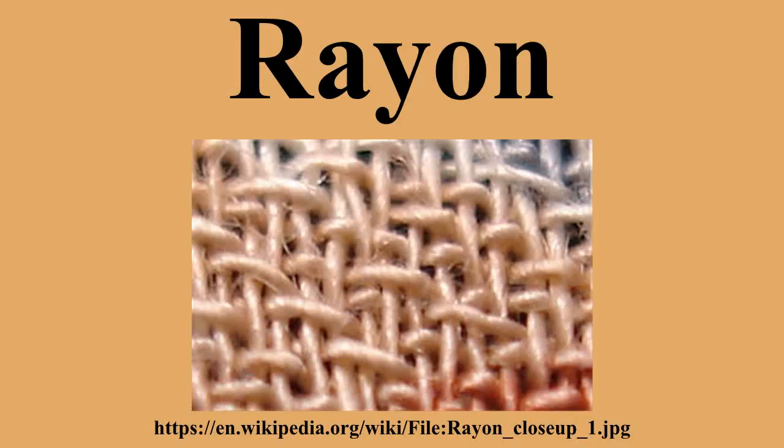The Swiss chemist Matthias Eduard Schweizer discovered that cellulose dissolved in tetraamminocopper dihydroxide. Max Freemery and Johann Urban developed a method to produce carbon fibers for use in light bulbs in 1897. Production of cupramonium rayon textiles started in 1899 in the Feinigter Glanzstoff factory near Arken. Improvement by J.P. Bemberg AG in 1904 made the artificial silk a product comparable to real silk.